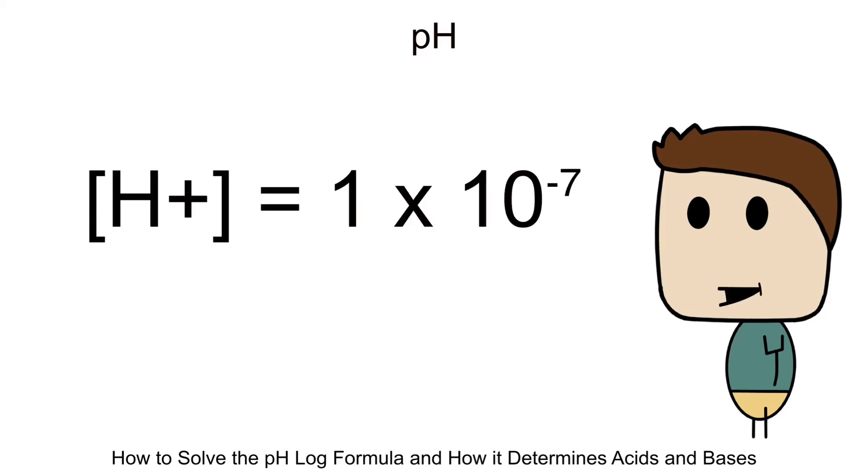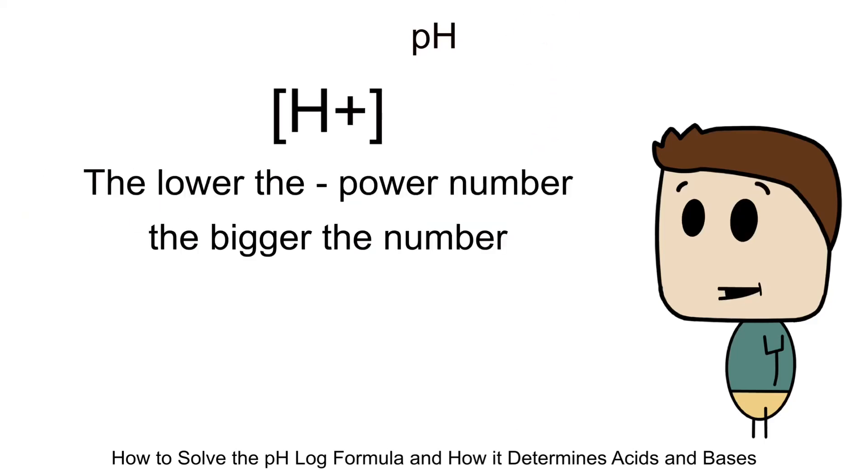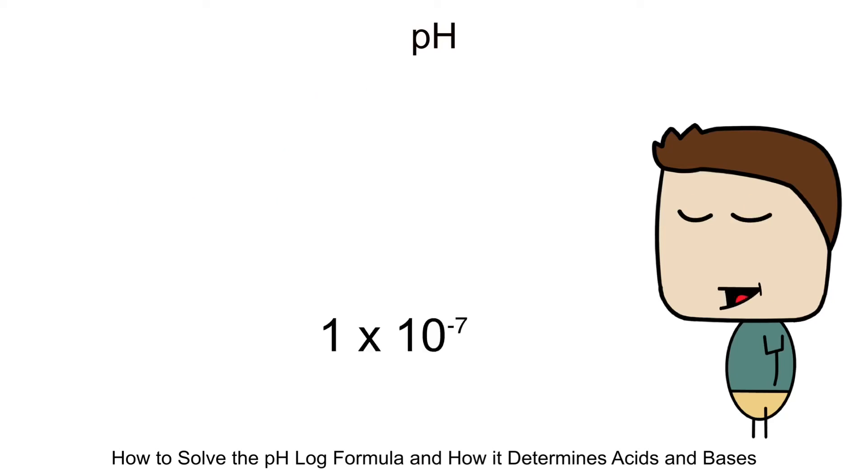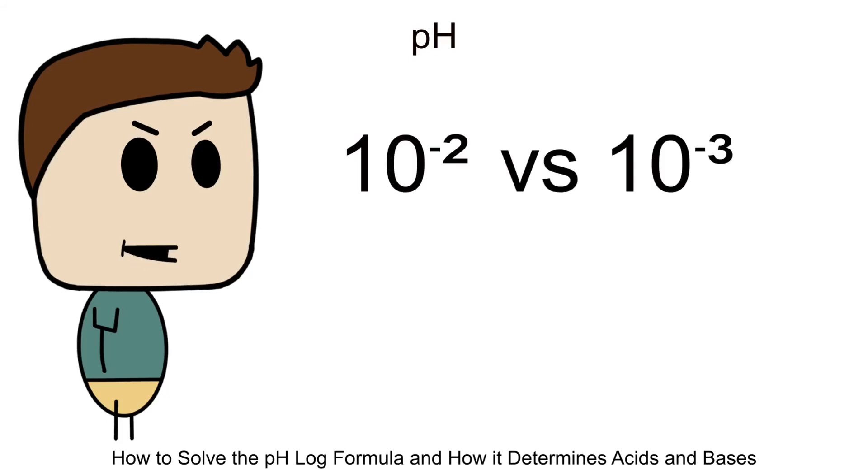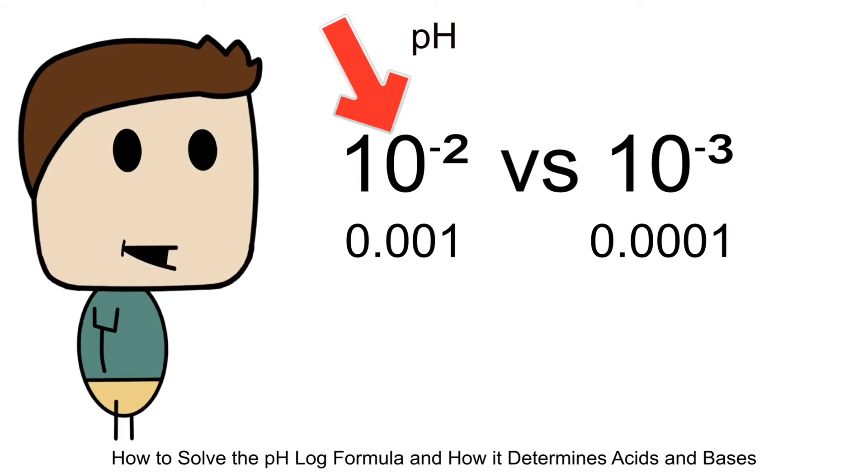Let's go back to the H plus concentration of 1 times 10 to the negative 7 which has a pH of 7. Now one thing that confuses some people is the power to a negative number. The lower the negative number, the bigger the number and thus the higher the concentration. What that means is the pH number has an inverse relationship with the H plus ion concentration. So numbers larger than 1 times 10 to the negative 7 can be for example 2 times 10 to the negative 7 or even 1 times 10 to the negative 6. And for the sake of explaining this, let's take 10 to the negative 2 versus 10 to the negative 3, which is larger? So 10 to the negative 2 is 0.01 while 10 to the negative 3 is 0.001. So 10 to the negative 2 is actually larger than 10 to the negative 3.